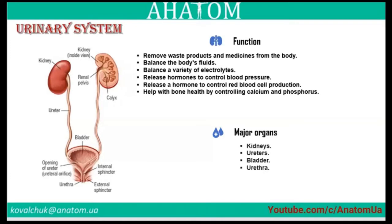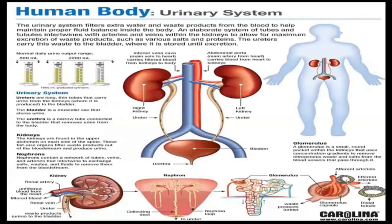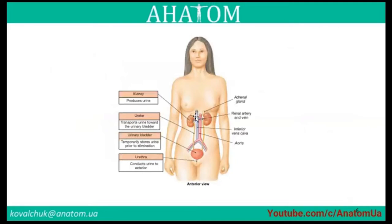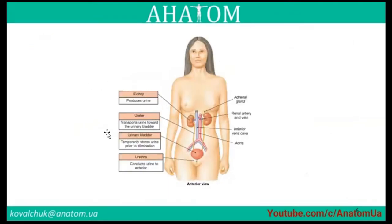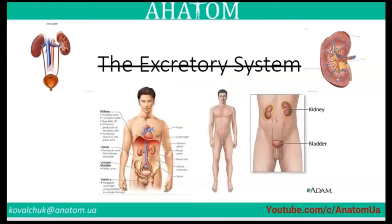The urinary system is part of the human body. The kidney first of all produces urine. The main excretory system — note that 'excretory system' is not the anatomical name for the urinary system. The main function of the kidney is to produce urine, transport urine toward the urinary bladder, and the urinary bladder temporarily stores urine.